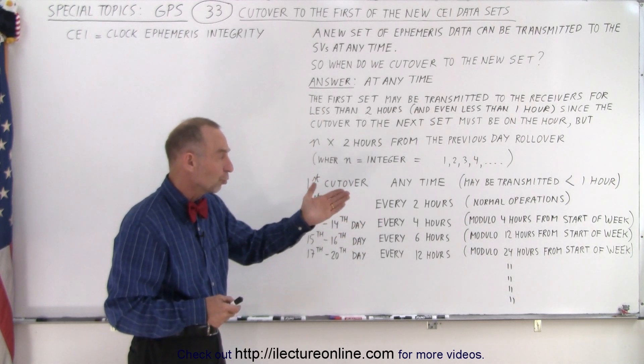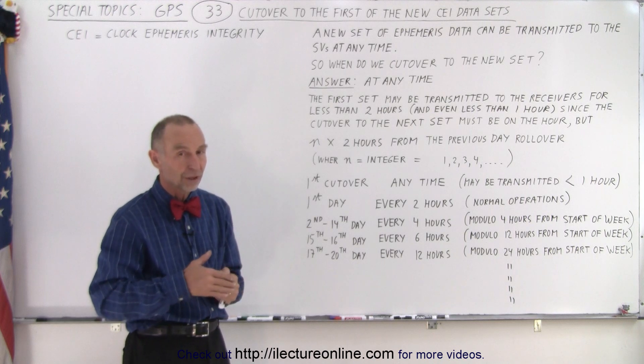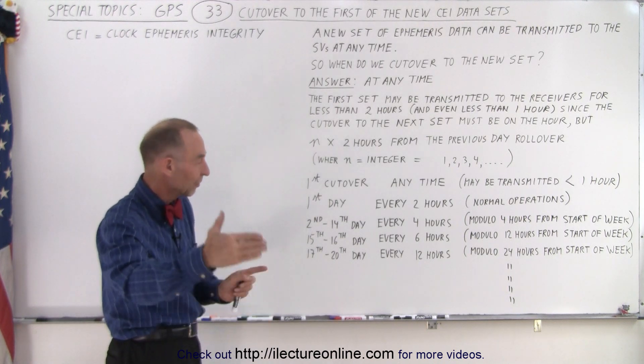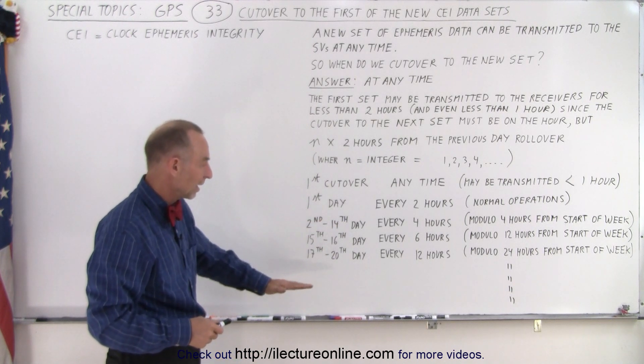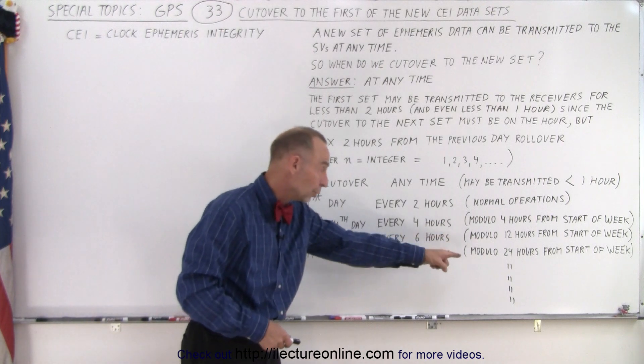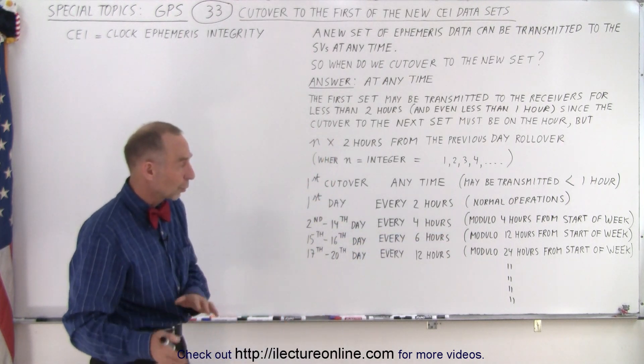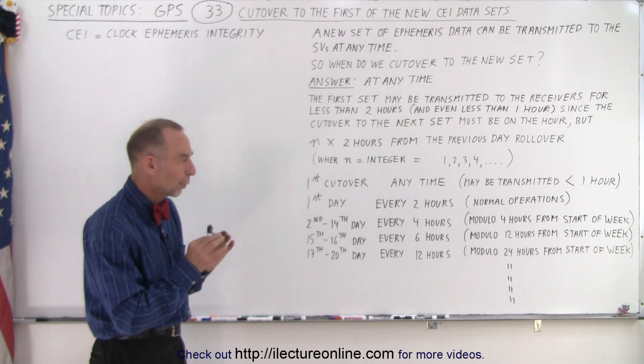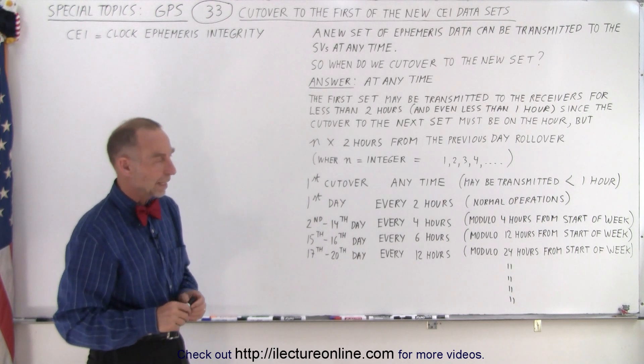But it's done on modulo 24 hours from the start of the week, in other words, at the end-of-week rollover. Then every 24 hours after that, you send a new data set. And for every period after that, all the way up to 63 days, you're going to cut over to the new data set every 24 hours relative from the start of the week.